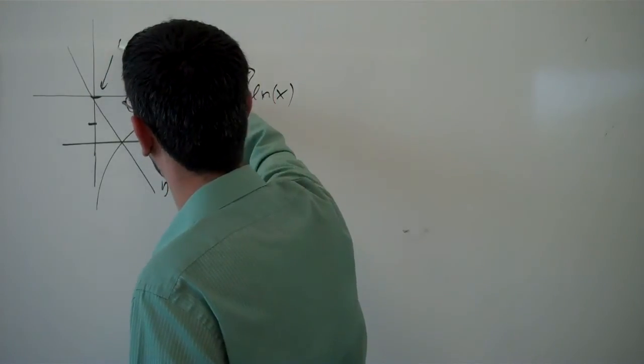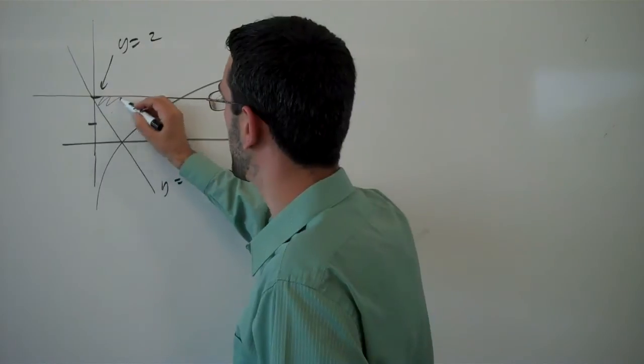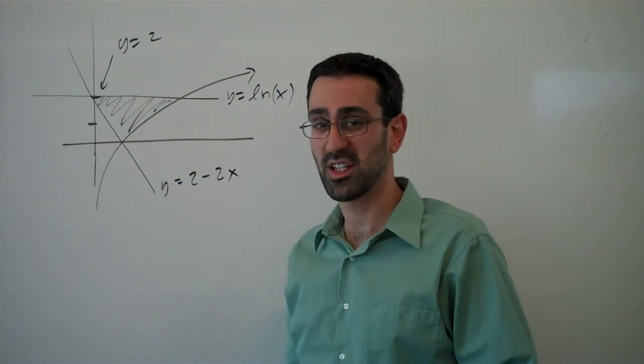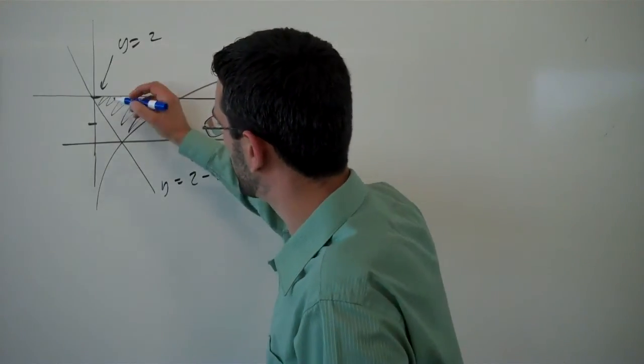So that's y equals 2 there. And so we're trying to find this area, the area bounded by those three curves. Now there's no reason we couldn't slice this vertically. In fact, we very easily could.